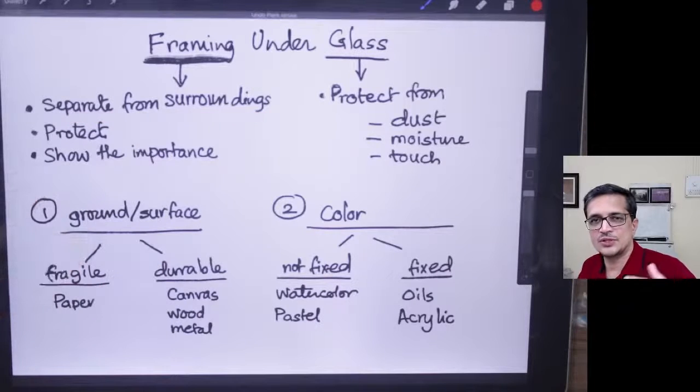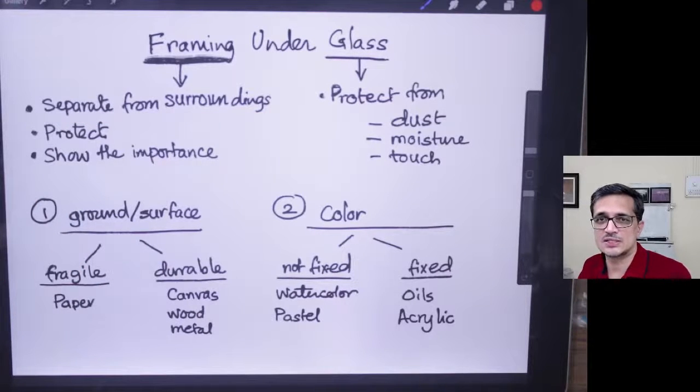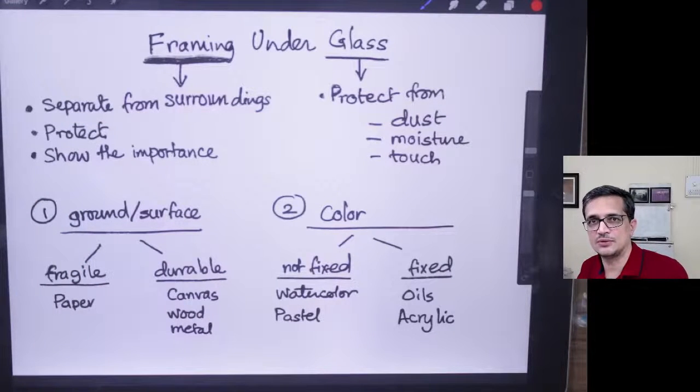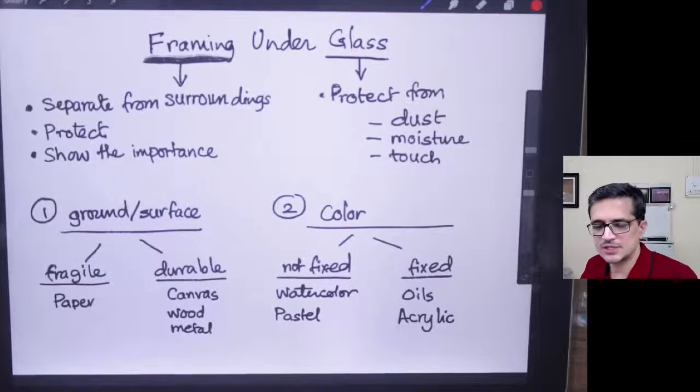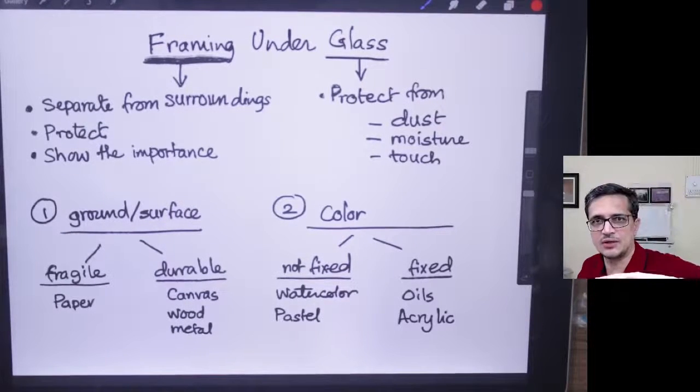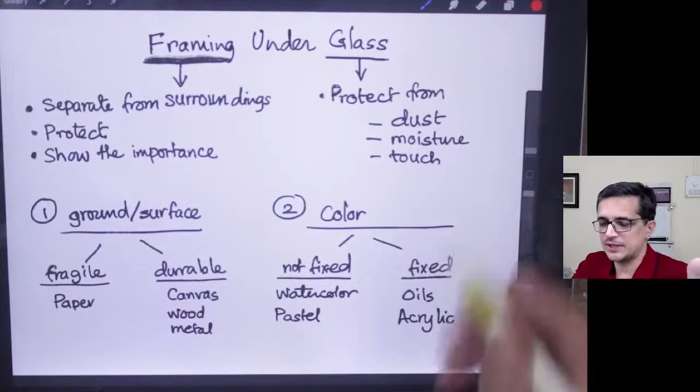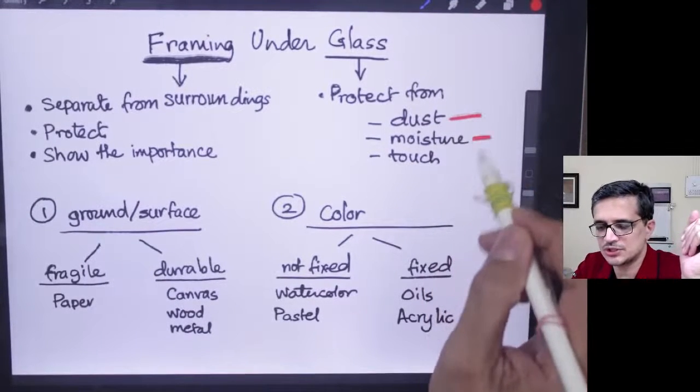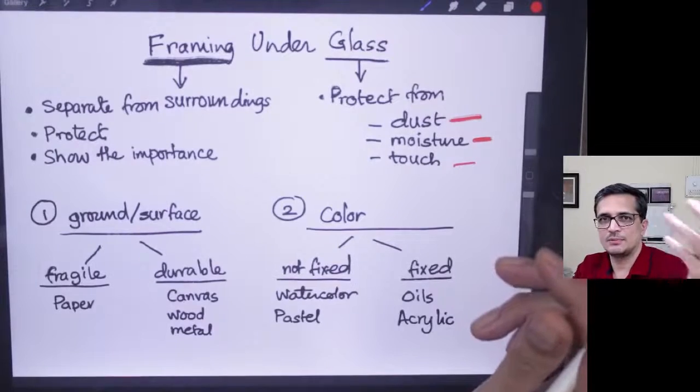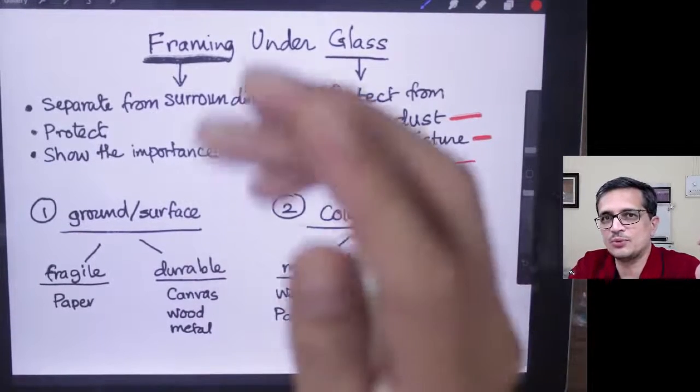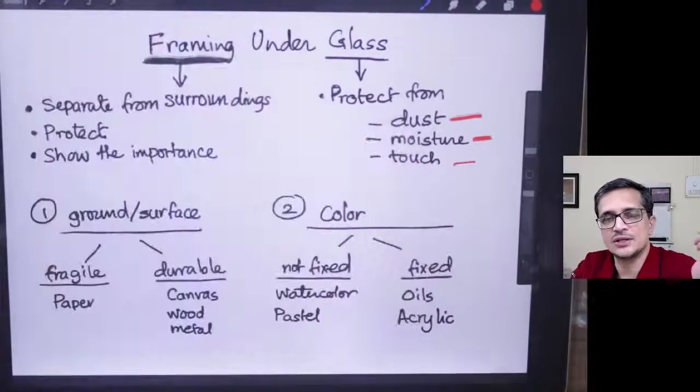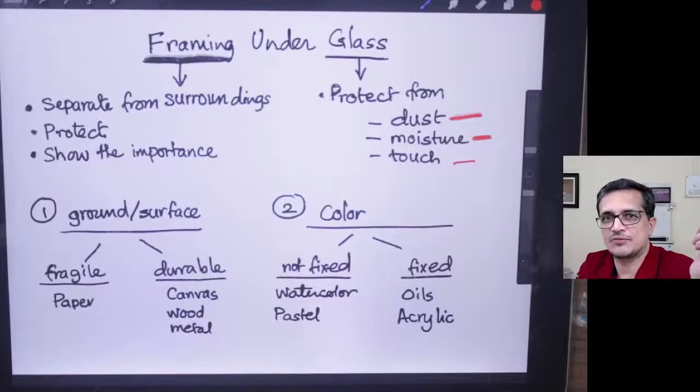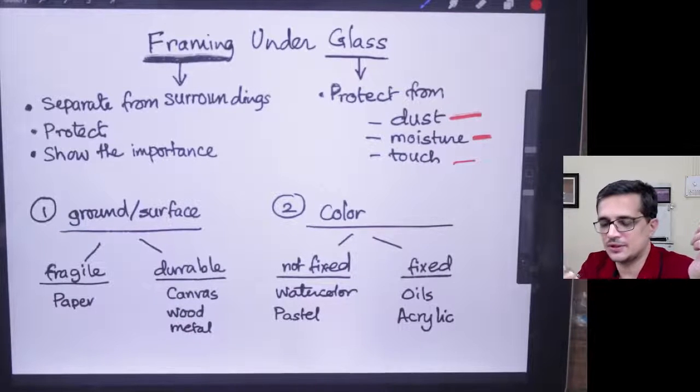Then the question of whether to use glass or not comes to the fore. What does the glass covering on the painting do? It protects the painting from dust, moisture, and touch. There are people who sometimes walk up to the painting and try to touch it, which is obviously bad for the painting surface, and that is avoided when you have glass on it.